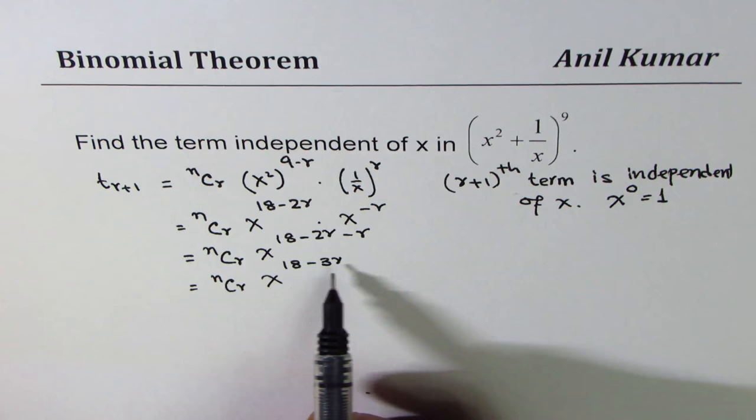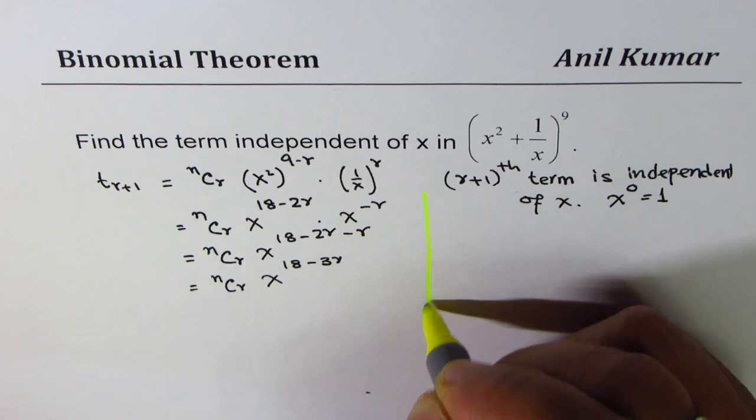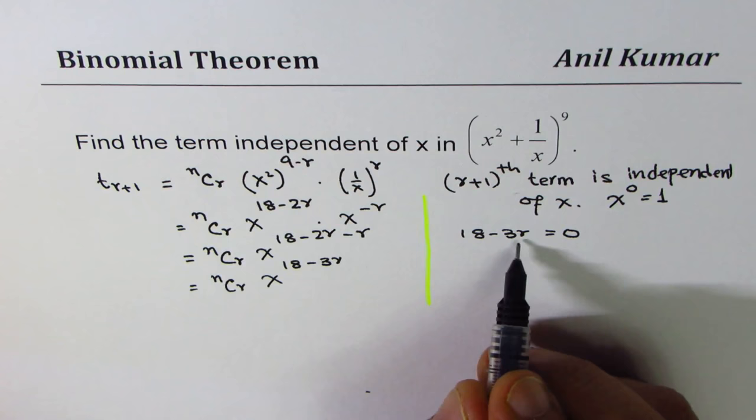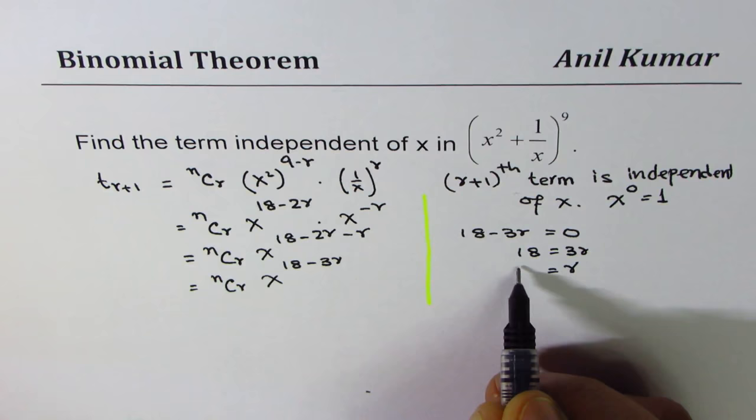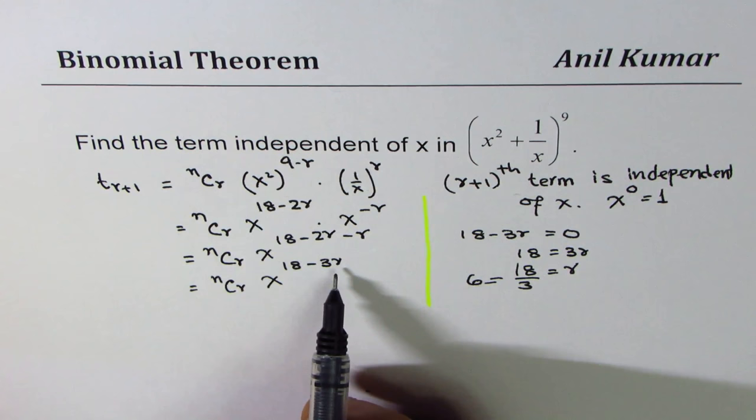Now, for independent term, x to the power of 18 minus 3r should be equal to 0. So, placing that condition, we can write 18 minus 3r equals 0. Then it will be x to the power of 0. And then calculate for r, which is 18 equals 3r, or r equals 18 divided by 3, which is 6. So, if r is 6, in that case, we are going to have a term which is independent of x.